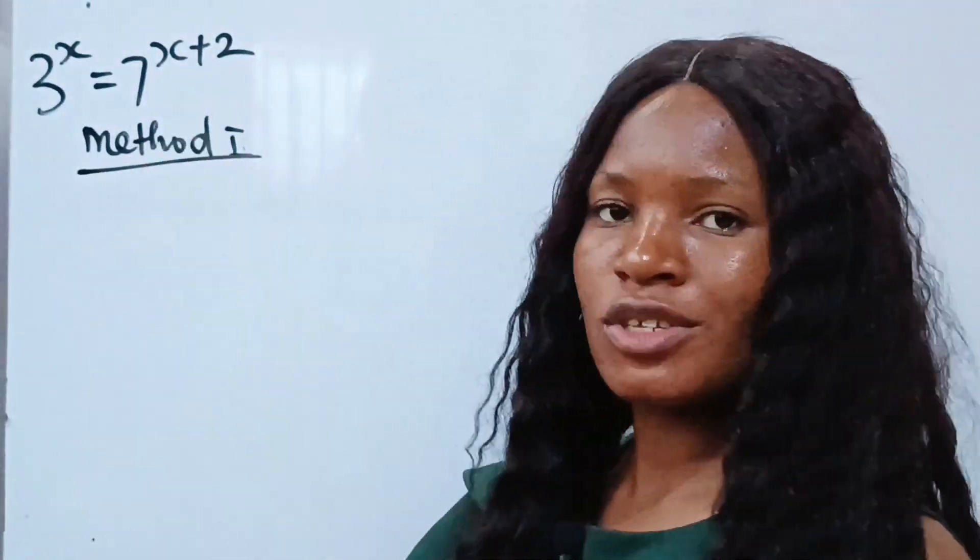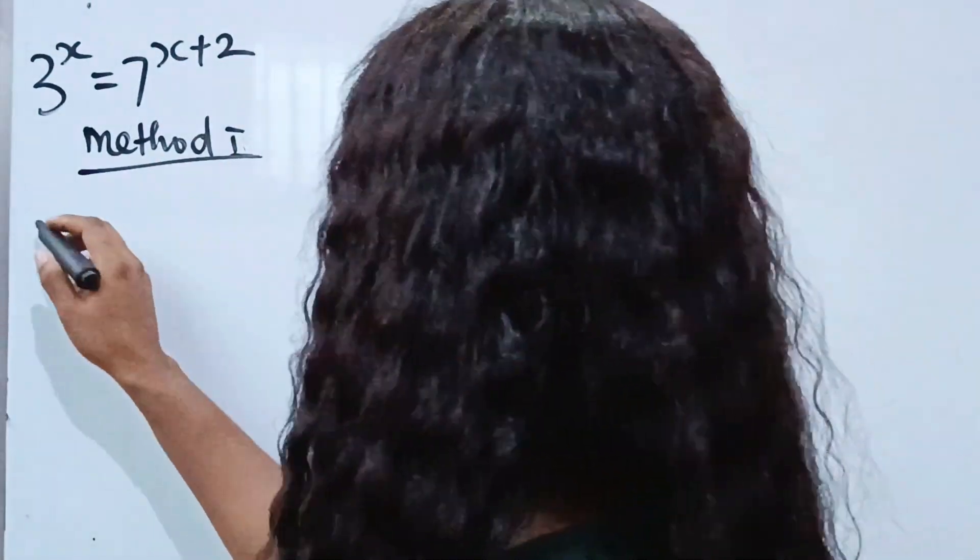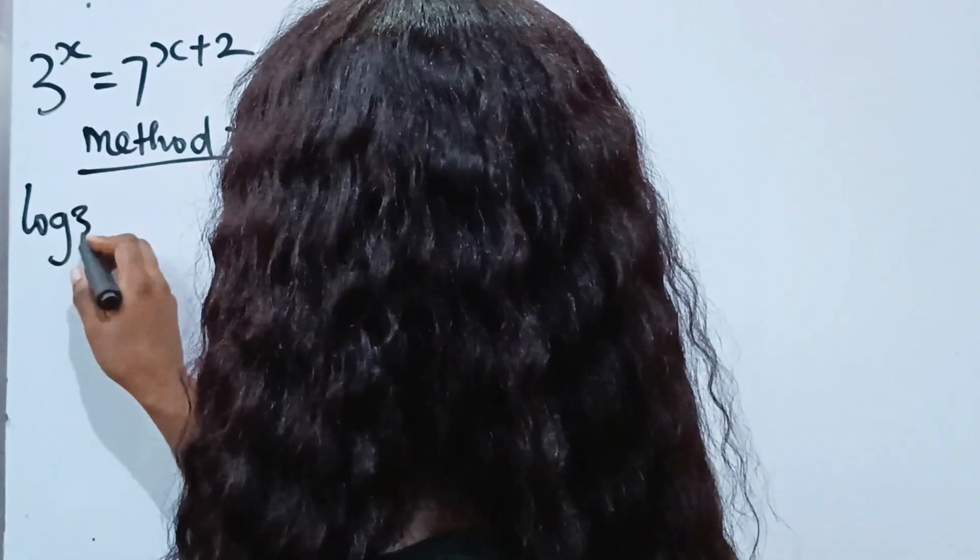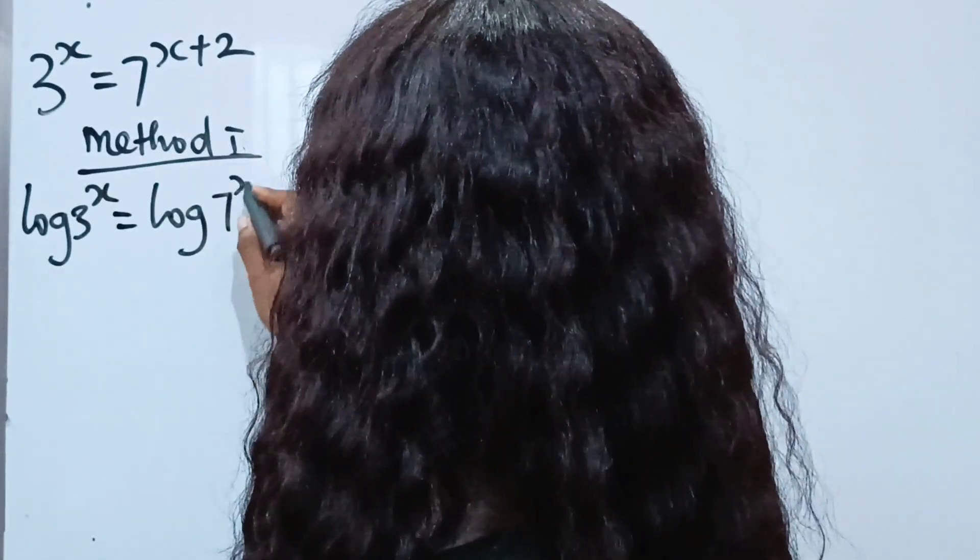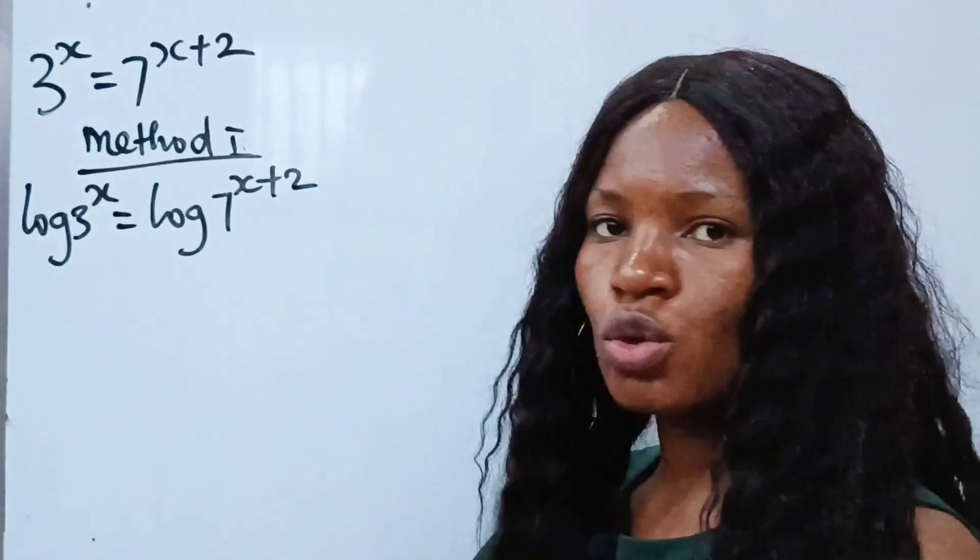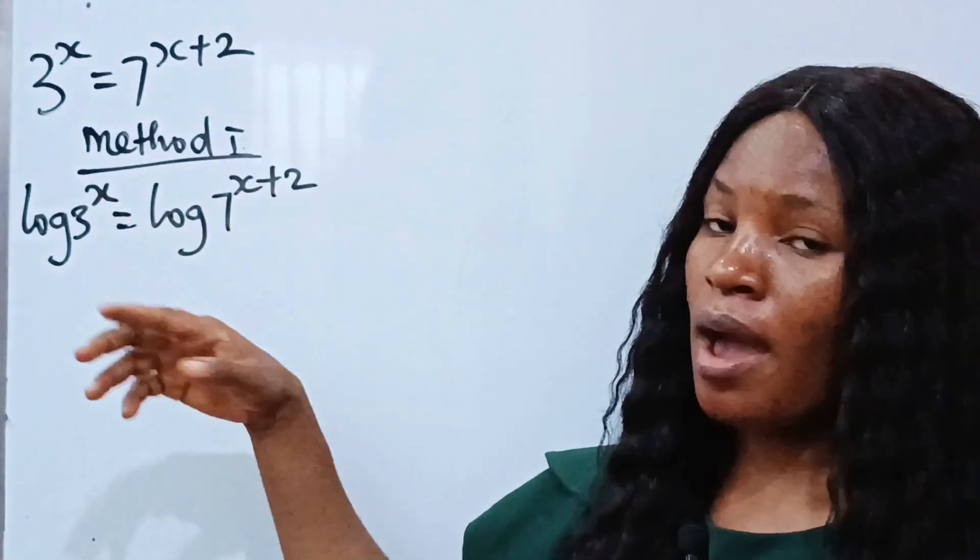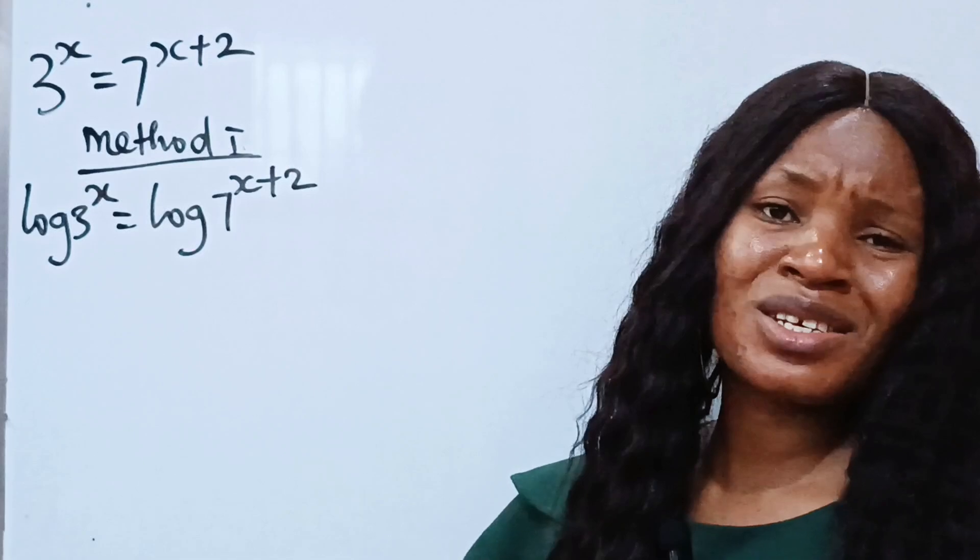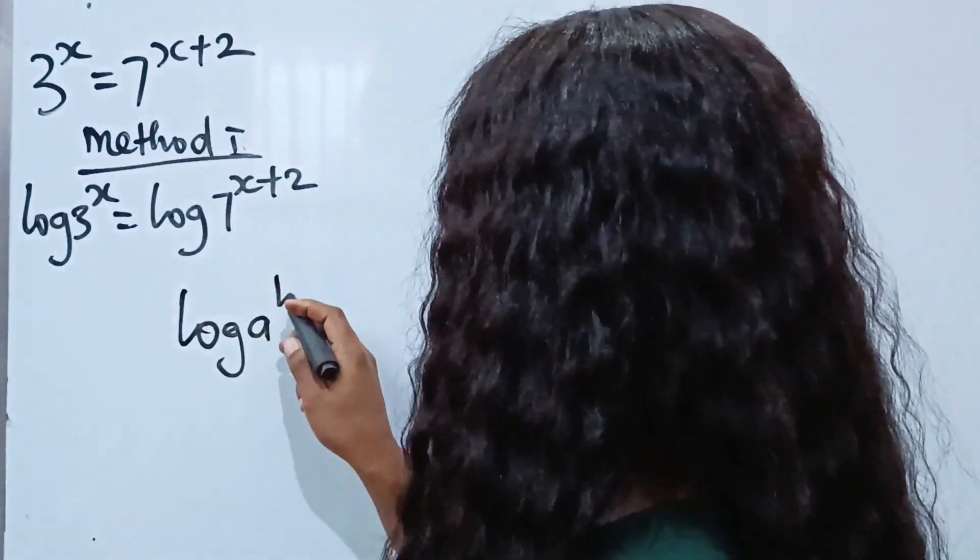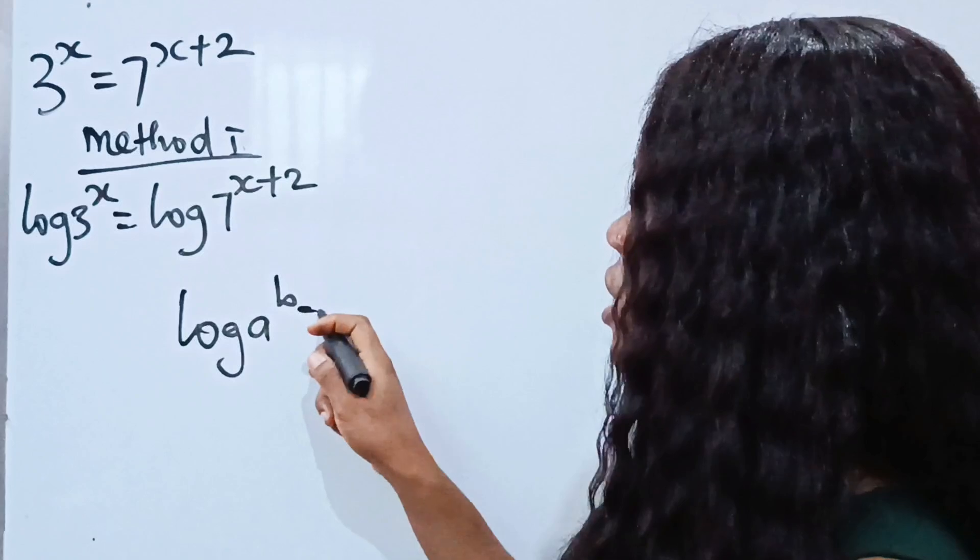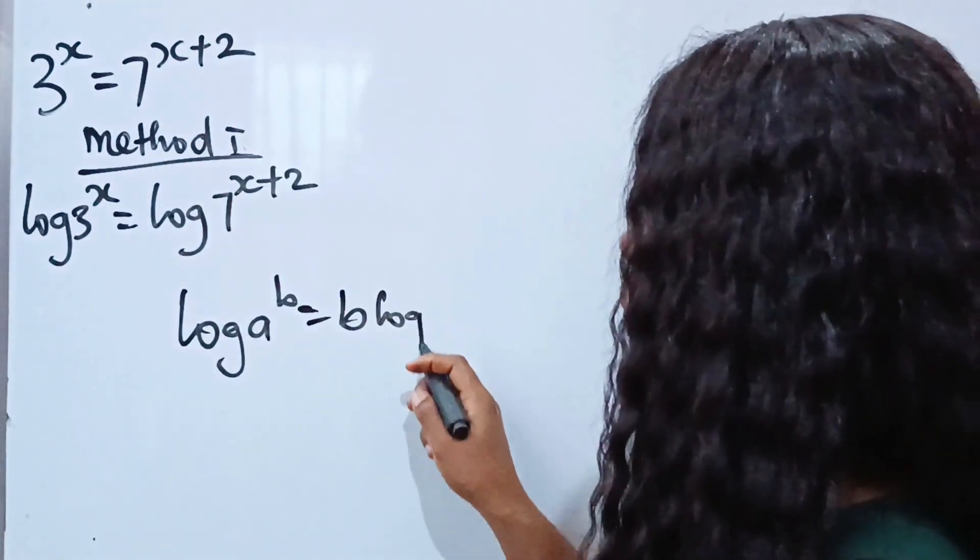We are going to introduce log straight from here. So we have log 3 to the power of x equals log 7 to the power of x plus 2. Now I'm going to bring down these powers. Why? Because I'm going to use the law of logarithms: log a to the power of b equals b multiplied by log a.